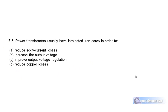Question 7.3: Power transformers usually have laminated iron cores in order to reduce eddy current losses. Laminated iron cores have nothing to do with increasing output voltage regulation or reducing copper losses. Copper losses are resistive losses in the transformer windings — the coils have some resistance and that produces a loss called copper loss.